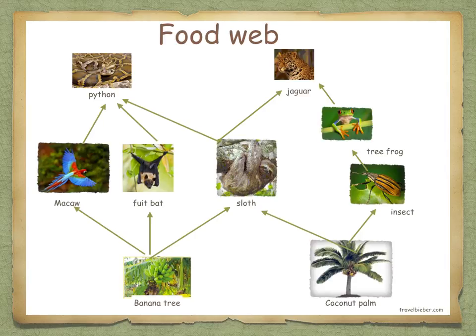While herbivores such as the insect are always primary consumers, notice how a jaguar is a tertiary consumer when it feeds on tree frogs, but when it feeds on the sloth, it's a secondary consumer.